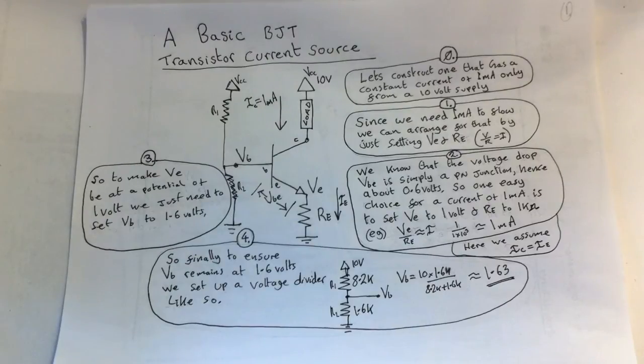Let's construct one of these that has a constant current of, say, one milliamp. That's our criteria: we want to build a transistor current source that has a flow of one milliamp at all times, and we'll run that from a 10 volt supply.